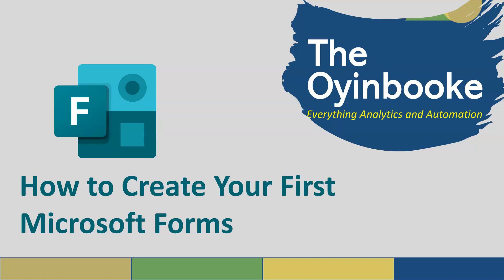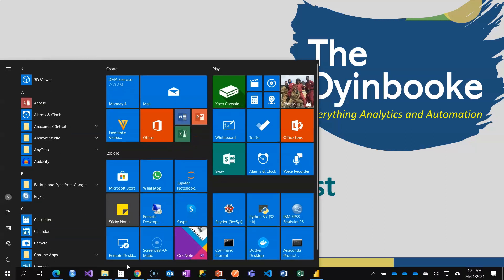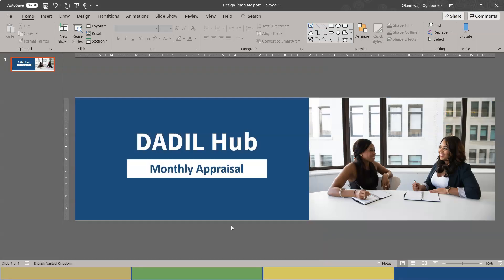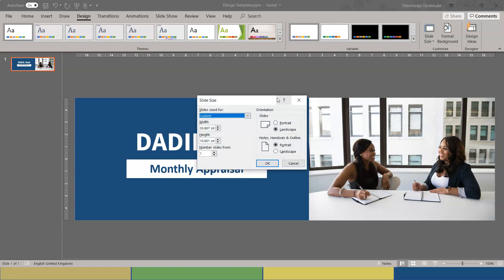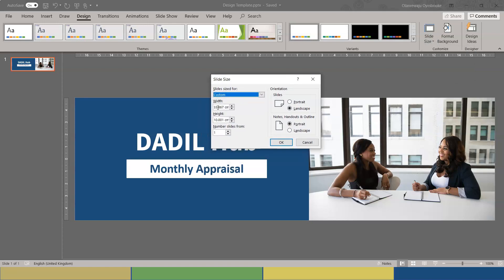One of the first things I would like to show you is using a header image in your form. I would advise you to try it along. You can do that by creating a PowerPoint template — just go to Design, then Size and Customize Size, and set the slide size to 33 by 10 centimeters.